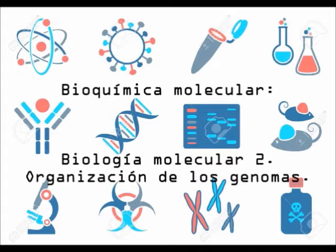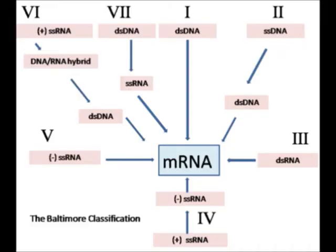If we continue talking about molecular biology and biochemistry, we have to discuss the organization of DNA in living organisms. Viruses — of which you have heard a lot, especially regarding coronavirus — can have genetic material in the form of DNA or RNA, and it can be double-stranded or single-stranded, as well as linear or circular. It is important to know what type of genetic material and mechanism each virus uses to produce infection.